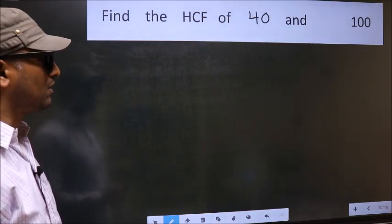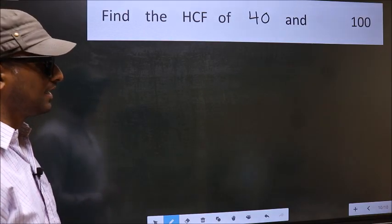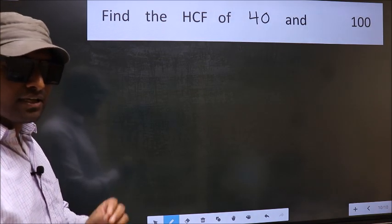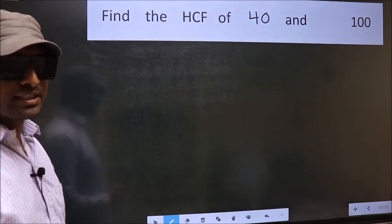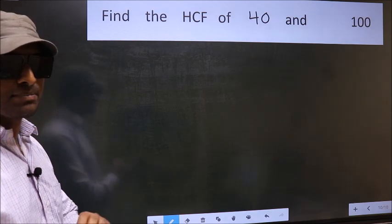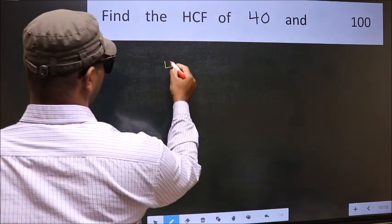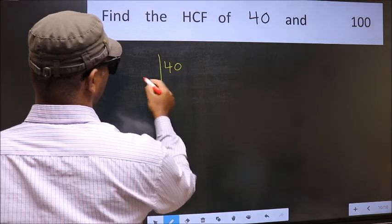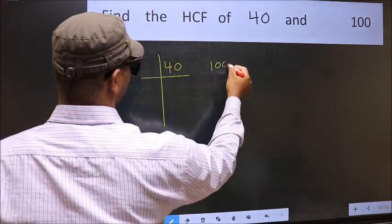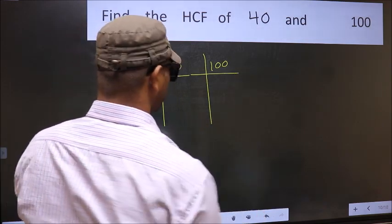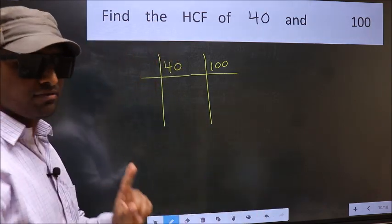Find the HCF of 40 and 100. To find the HCF, we should do the prime factorization of each number separately. What I mean is 40 and 100. This is your step 1.